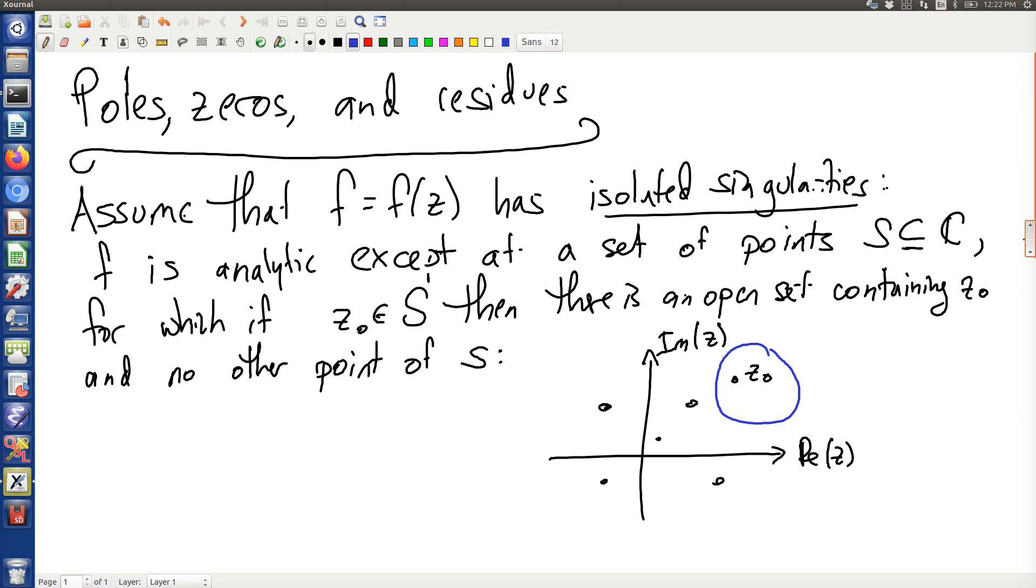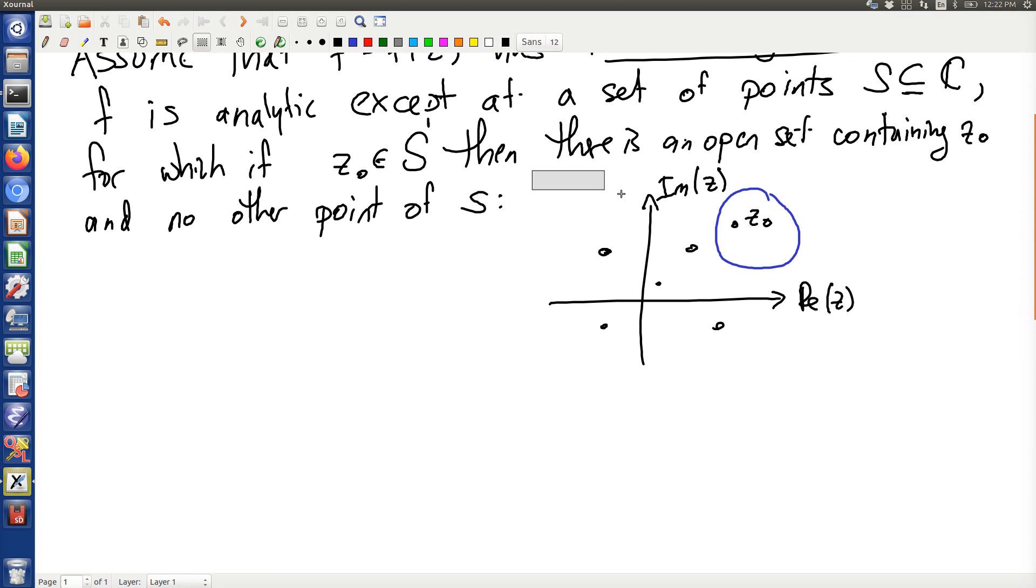Particularly what I am excluding is the situation where we have a sequence of points that tend to z₀. In this case here, no open set containing z₀ alone. This is not what we are talking about.